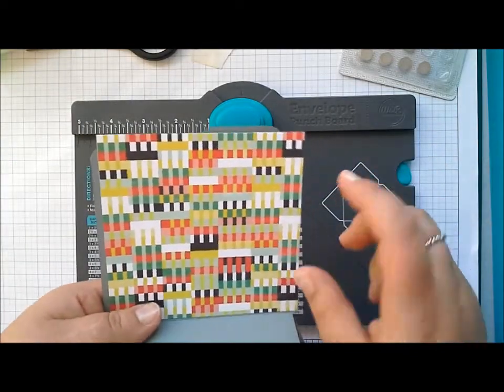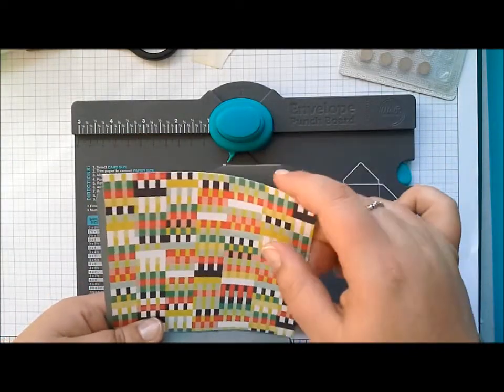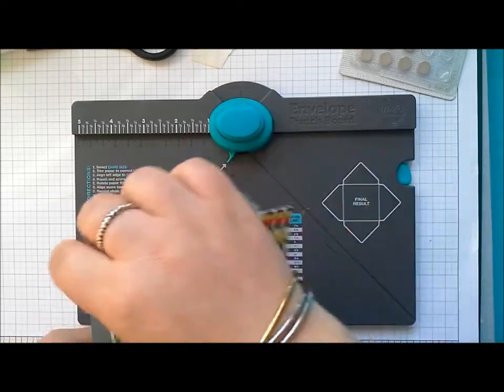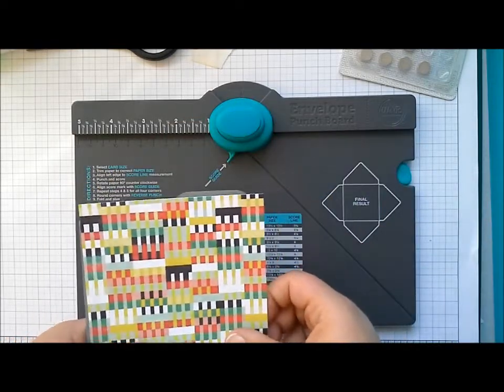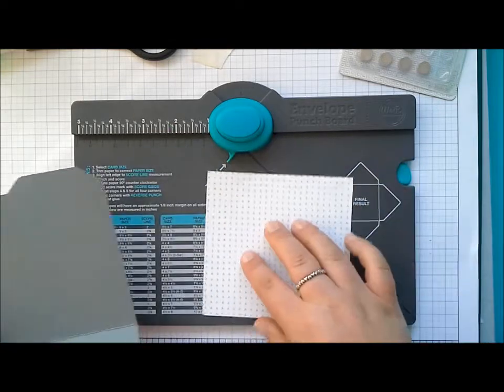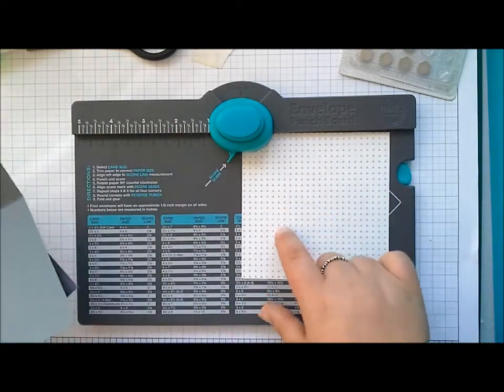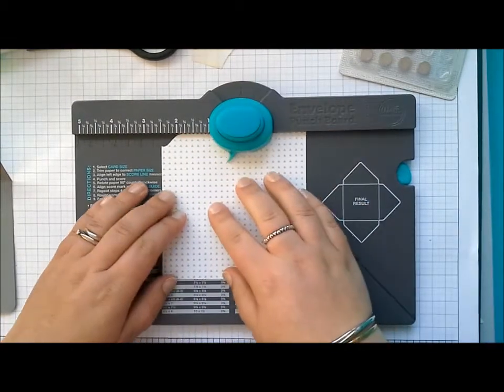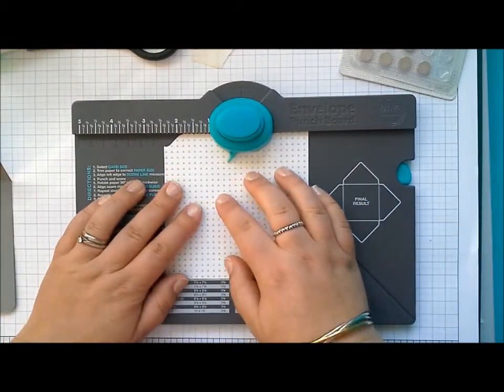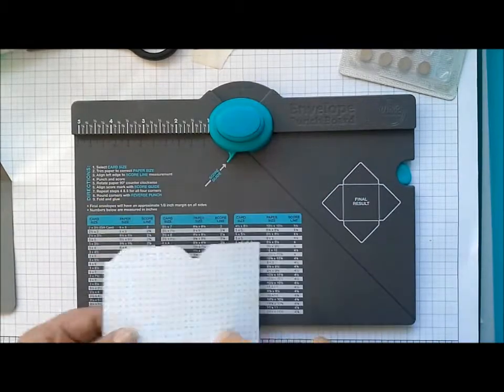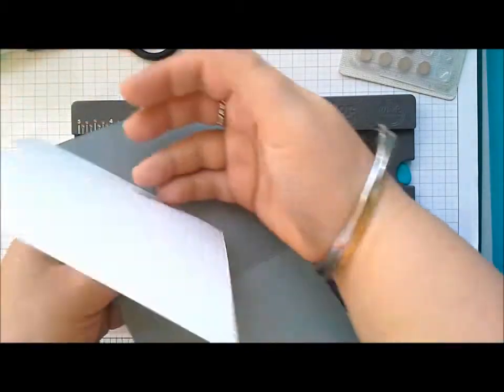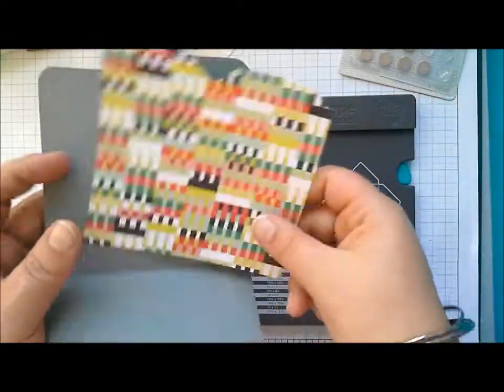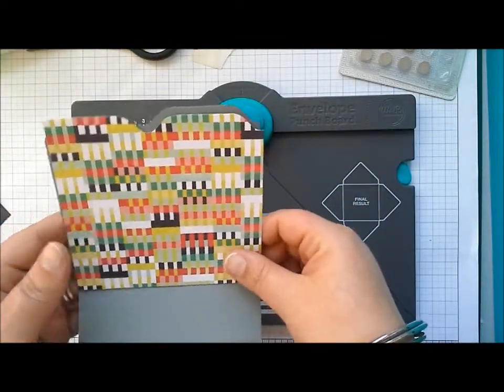Now for your inside piece don't forget that the tab is on the other side. Depending on where you want the tab you're going to flip your paper over depending on what design you want. Same thing, punch, move it over to two and a half and punch. When I flip that around that is going to be my inside piece.